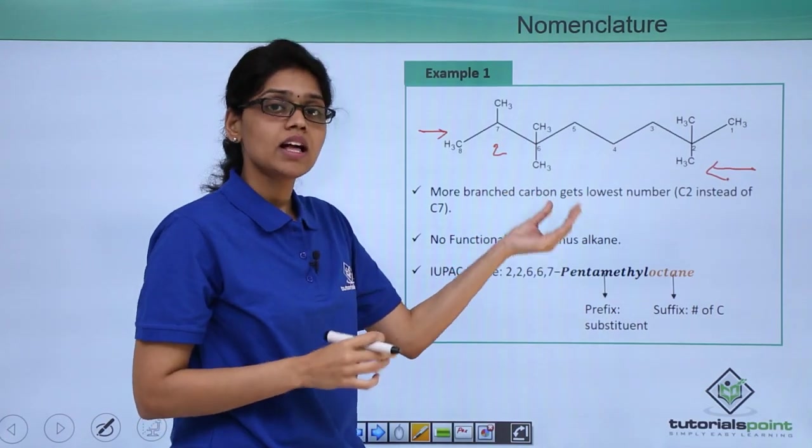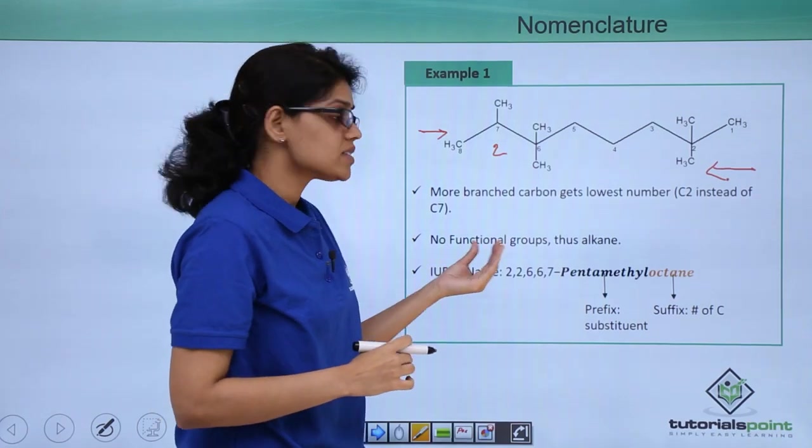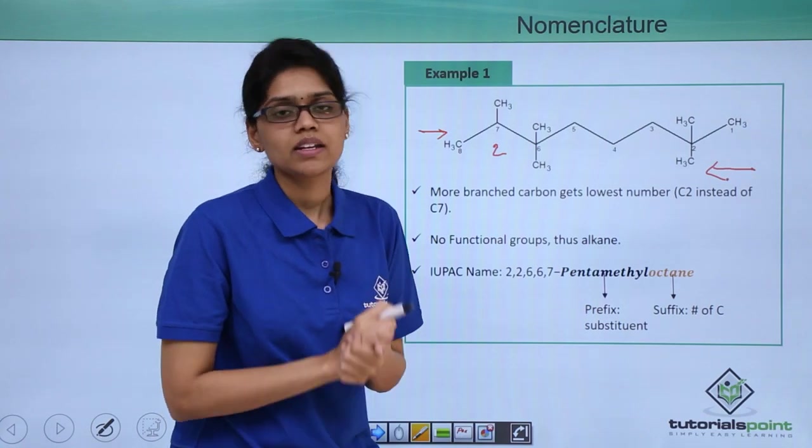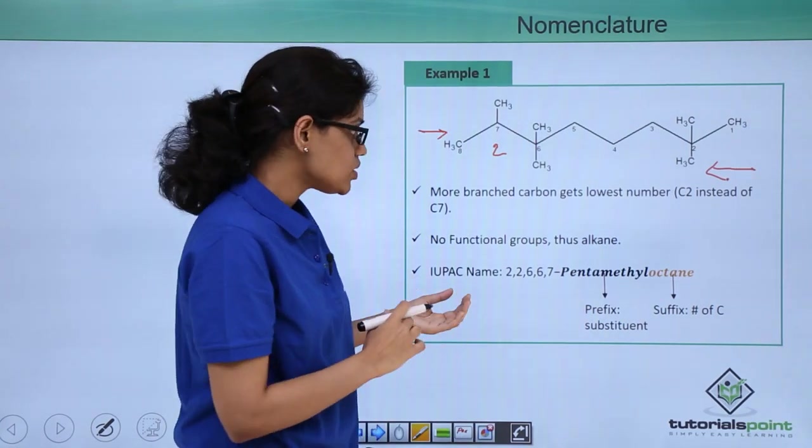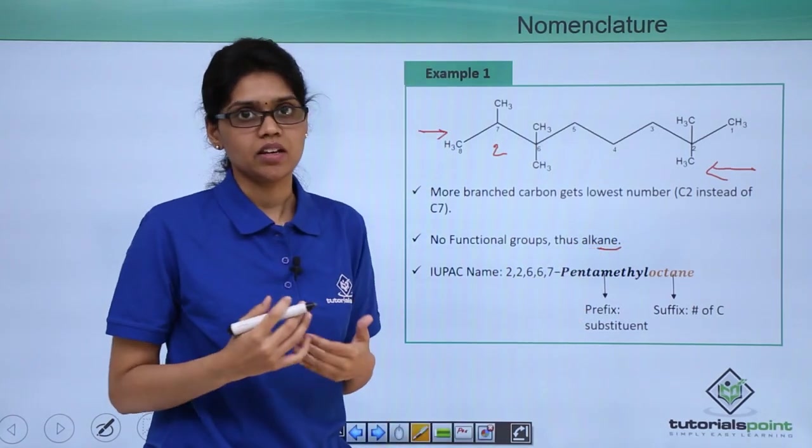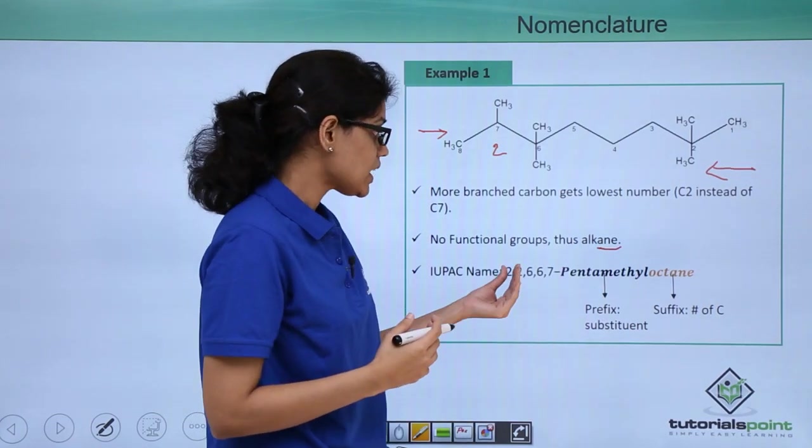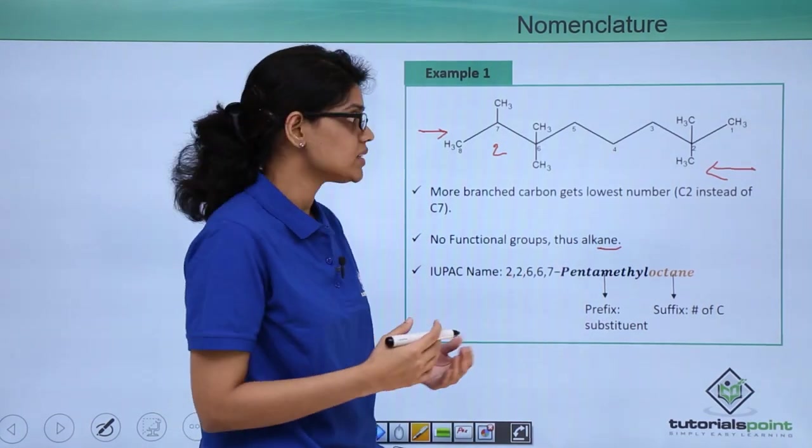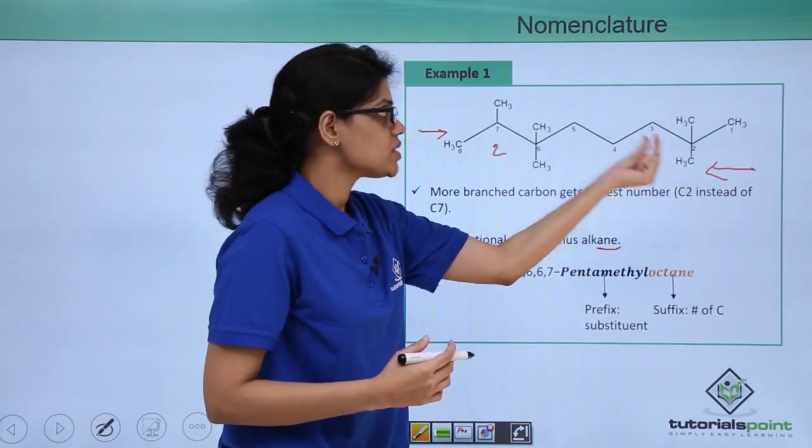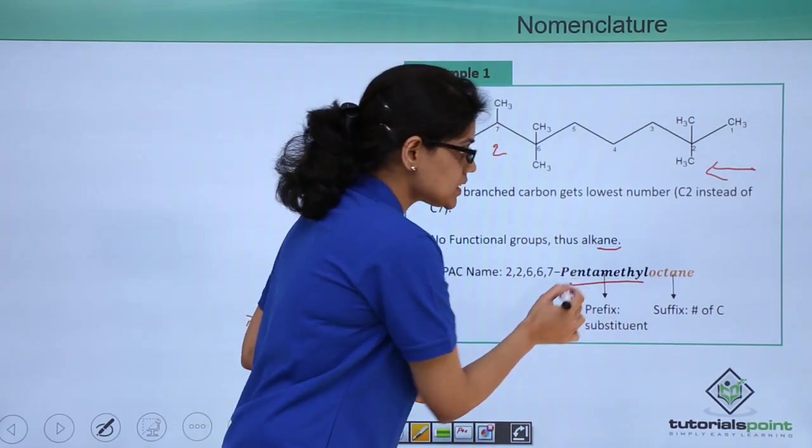We have seen that the more branched carbon would be getting the highest priority or the lowest number. There is no functional groups and there are no double bond or triple bond. The hydrocarbon is an alkane. Based on that you can see that since it is an alkane the root name will end with ane. You have your prefix here which is a substituent and along with this position you can see that it will be 2,2,6,6,7 because you have 2 methyl groups at C2, 2 at 6 and 1 at 7. 2,2,6,6,7-pentamethyloctane.